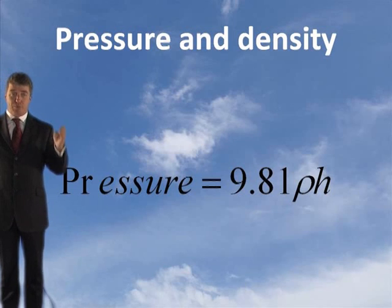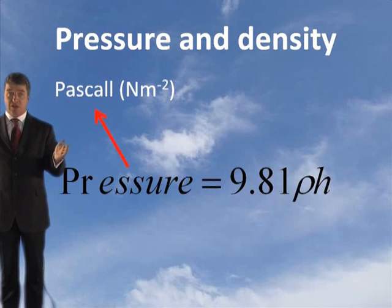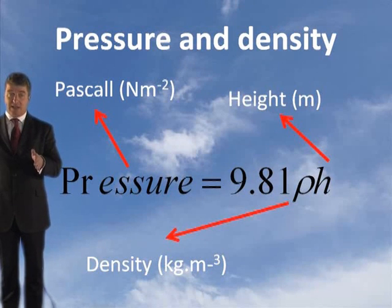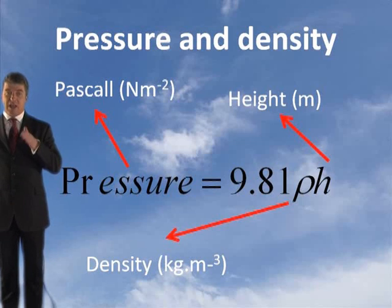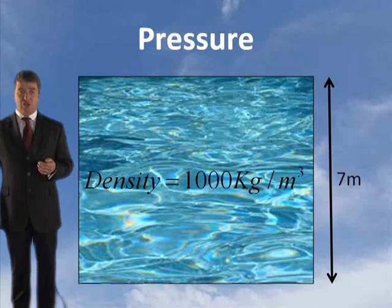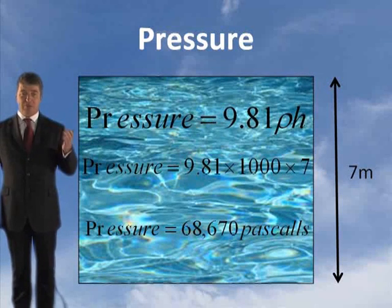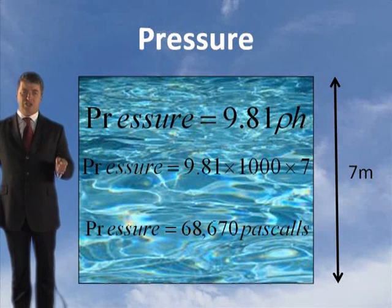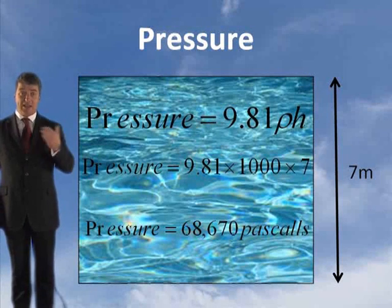The pressure, in pascals (newtons per metre squared), equals 9.81 times the density in kilograms per metre cubed, times the height in metres. Very important to remember: pressure equals 9.81 times rho times h. Let's have an example. What is the pressure at the bottom of a column of water 7 metres high? The density of water is 1,000 kilograms per metre cubed. Applying the formula: pressure equals 9.81 times 1,000 times 7, giving us a pressure of 68,670 pascals. Pascals is newtons per metre squared — that's pressure.